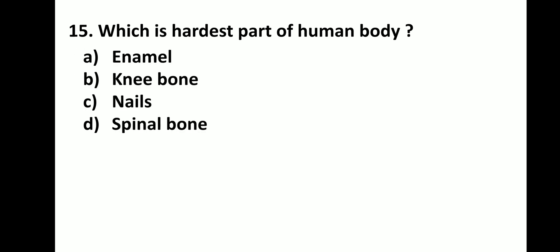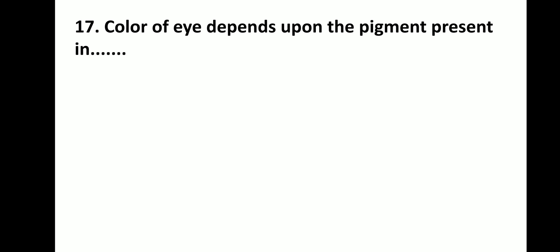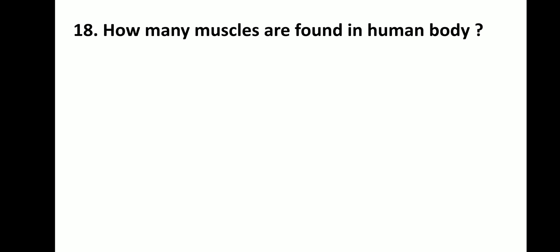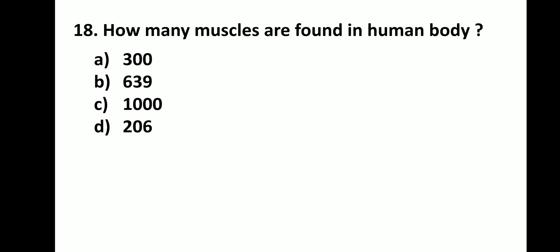The colour of the eye depends upon the pigment present in the iris of the eye. The colour of the skin depends on melanin.